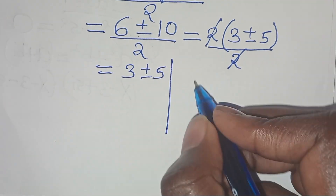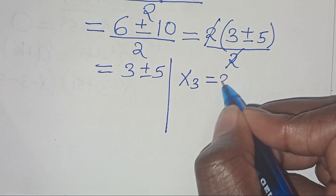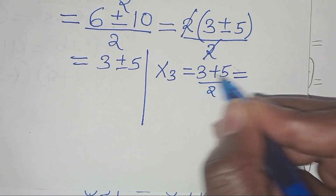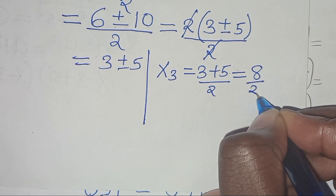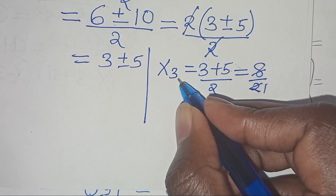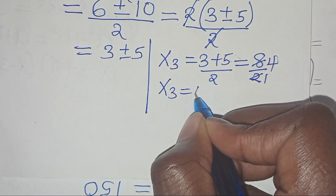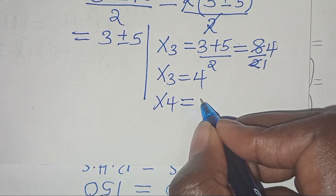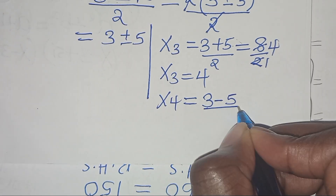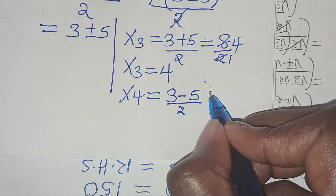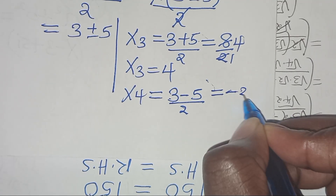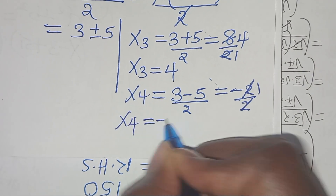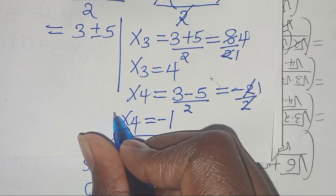This implies x3 is equal to 3 plus 5 divided by 2, which is 8 divided by 2, therefore x3 is equal to 4. And x4 is equal to 3 minus 5 divided by 2, which is minus 2 over 2, therefore x4 is equal to minus 1.